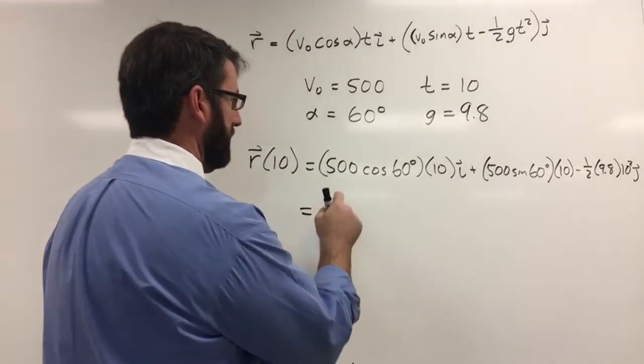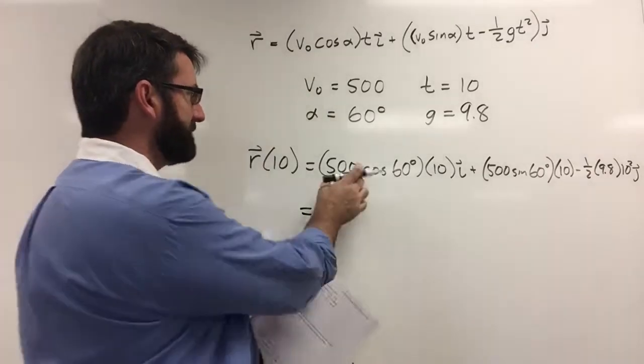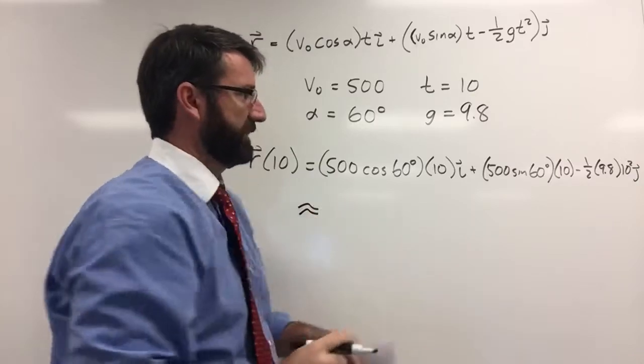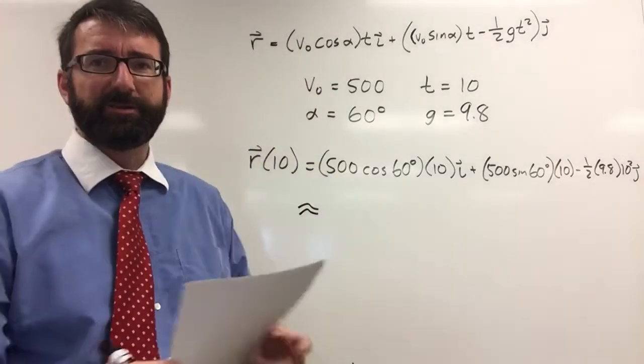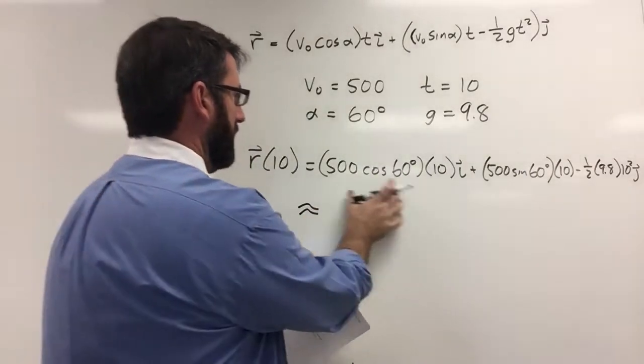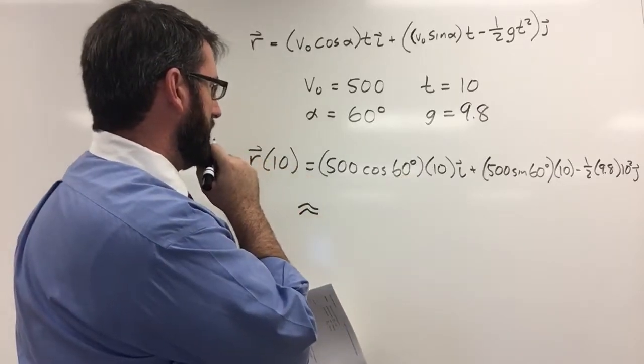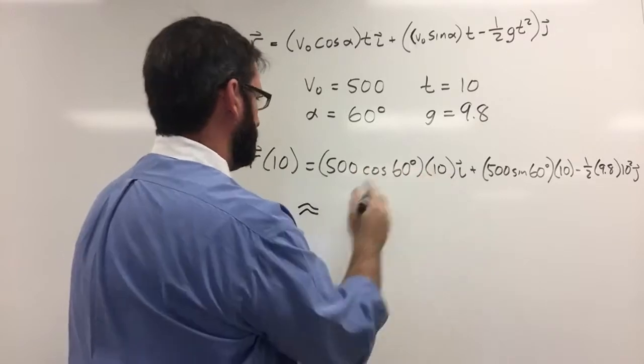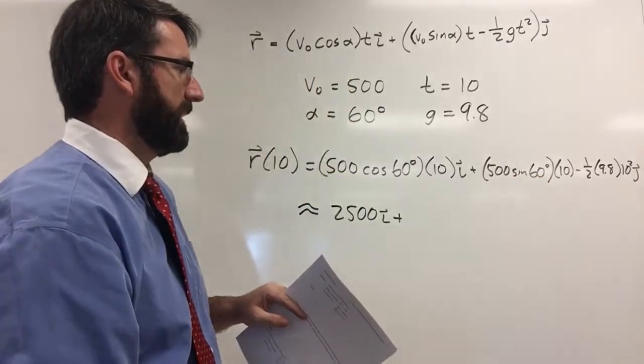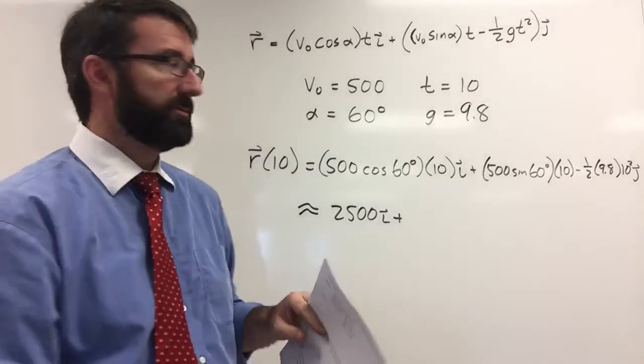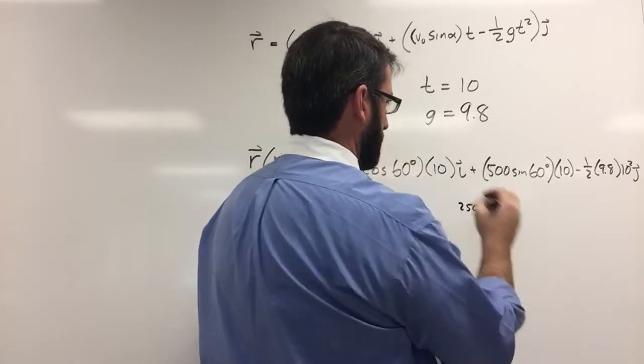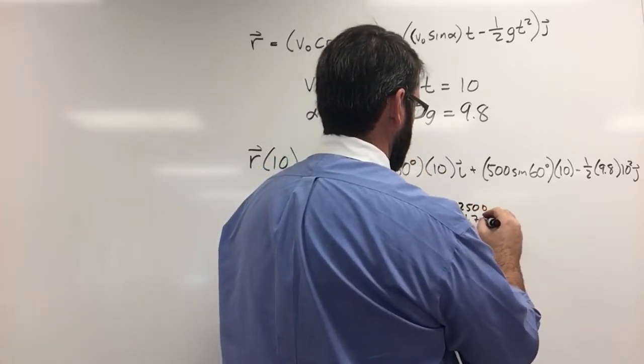All right, and now cosine of 60 degrees is 1 half times 500 is 250. I'm going to actually make this approximate because we're going to be rounding some numbers over here. And also, this is ideal motion. We're ignoring some things like the rotation of the earth and drag and things like that. So this is going to be approximately equal to 1 half times 500 is 250 times 10 is 2500i plus sine of 60 degrees is square root of 3 over 2 times 500. So that's 250 square root of 3 times 10. So this is 2500 times the square root of 3, which is 1.732.